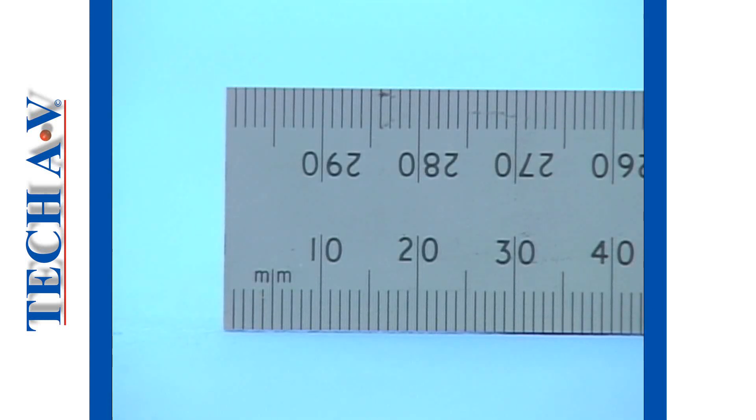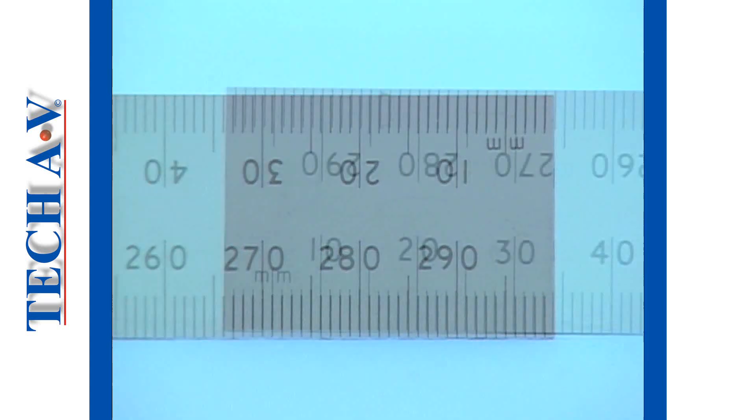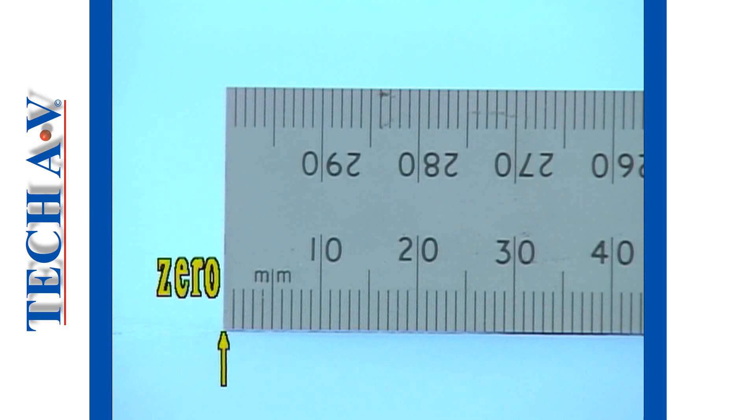Returning to our rule, on the millimeter scale we can read the figures 10 up to 290. The very edge of the rule nearest to the figure 10 is the 0 or zero position. We always begin our readings at the end edge.